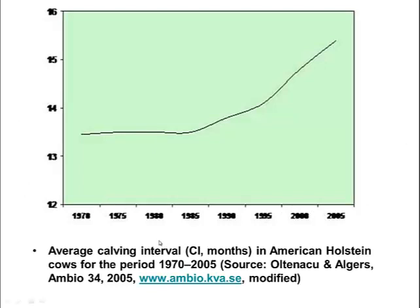This is another study looking at the average calving interval in American Holstein cows from 1970 to 2005. Back in the 70s there was almost a 12 to 13 month intercalving interval, but this has steadily increased to a 15 to 16 month intercalving interval. So cows are not producing one calf per year in some of these high-producing herds.